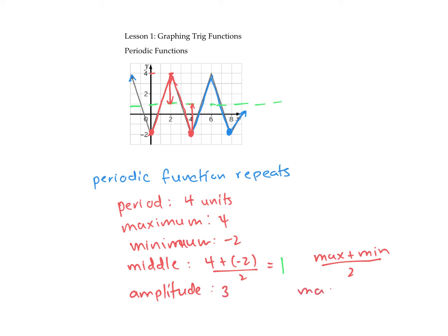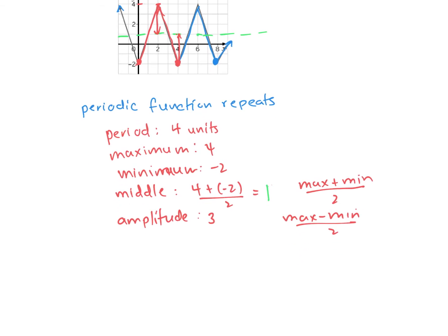We can also find the amplitude by taking the maximum minus the minimum and dividing by two. So the maximum was four, the minimum was negative two: four minus negative two is six, divided by two is three.